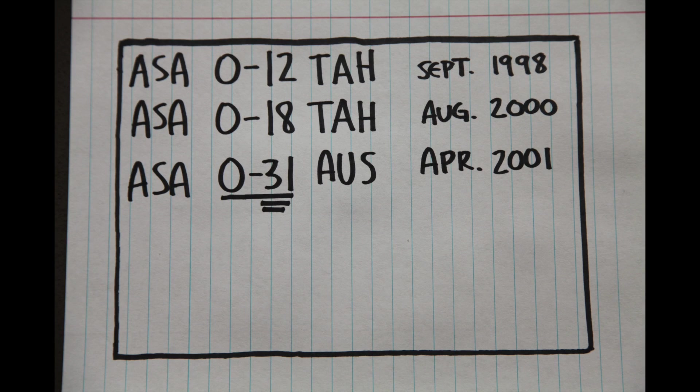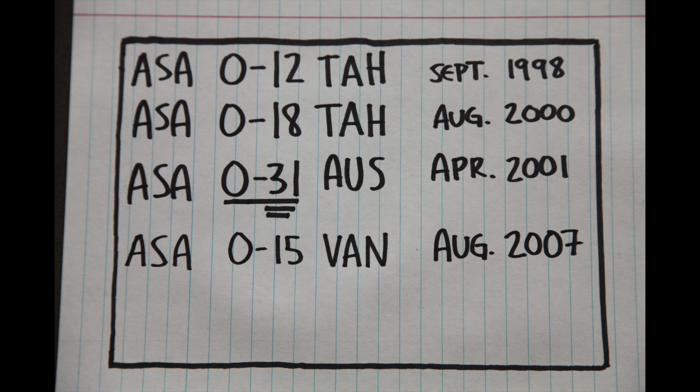A loss to Australia in April 2001 by a score of 0-31, which remains a FIFA record for the largest loss ever. And they lost to OFC powerhouse Vanuatu by a score of 0-15.